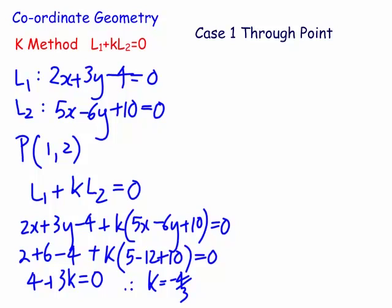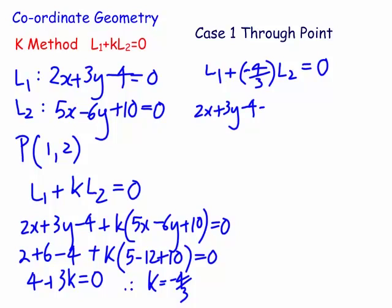Therefore the K value in this case is minus 4 over 3. Once we've got the K value, we substitute it back into line 1 plus K times line 2. So it's 2x plus 3y minus 4 plus minus 4 over 3 times 5x minus 6y plus 10 equals zero. We'll multiply through by 3, which gives us 6x plus 9y minus 12 minus 20x plus 24y minus 40 equals zero.